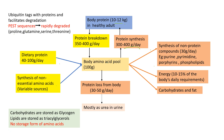The body amino acid pool in a normal healthy adult has 100 grams of proteins. Because amino acids are the building blocks of proteins, the majority of amino acids are utilized to form proteins. Nearly the same amount of protein synthesized in the body equals the amount from protein breakdown, and most amino acids are formed by breakdown of these proteins.